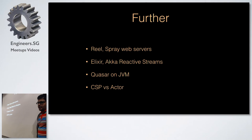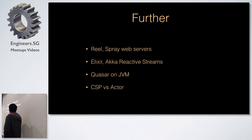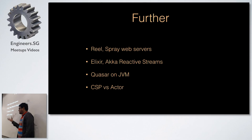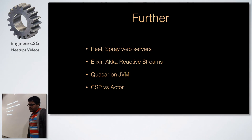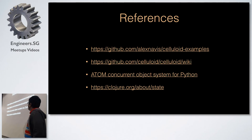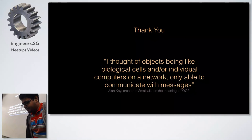Further topics: Reel is based on the Celluloid framework; Spray is another actor-based web server; Elixir also has CSP-like things; Akka and Reactist are getting popular with actor concurrency; and Project Loom is the one we discussed for lightweight processes on the JVM. Find the differences between CSP and actors — some good references are listed, including ideas about how concurrency choices are made.